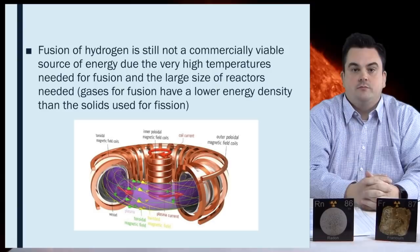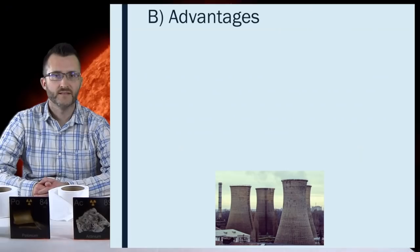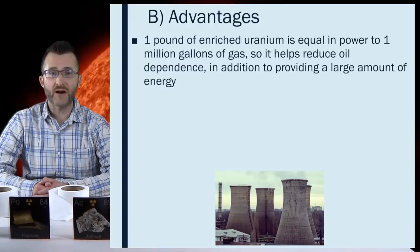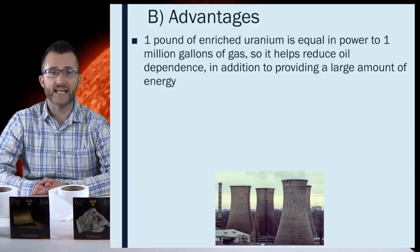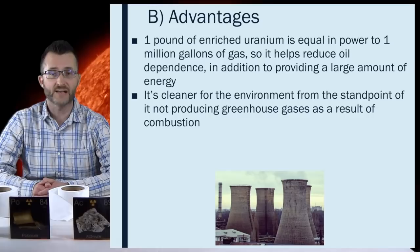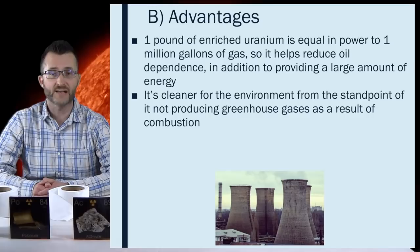Advantages. One pound of enriched uranium is equal in power to one million gallons of gas. So it helps reduce oil dependence in addition to providing a large amount of energy. It's cleaner for the environment from the standpoint of it not producing greenhouse gases as a result of combustion. If fusion reactors, also known as thermonuclear reactors, become economical, the waste products have very short half lives and thus long term storage is not an issue.